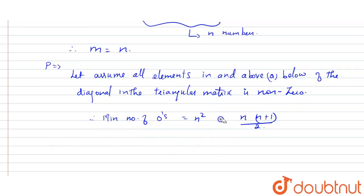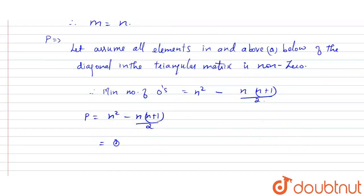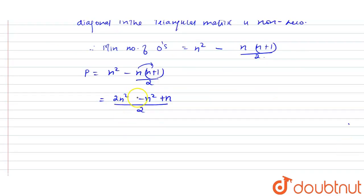Simplifying p: p = n² − n(n+1)/2. Taking the LCM, p = (2n² − n² − n)/2 = (n² − n)/2. So p = n(n−1)/2.